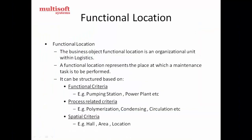Functional locations are an organizational unit in logistics. Functional locations represent the place at which a maintenance task is to be performed. They are divided into three structures: functional criteria, process-related criteria, and spatial criteria. Functional criteria includes places like pump stations, power plants, or any other functional areas where work is performed.